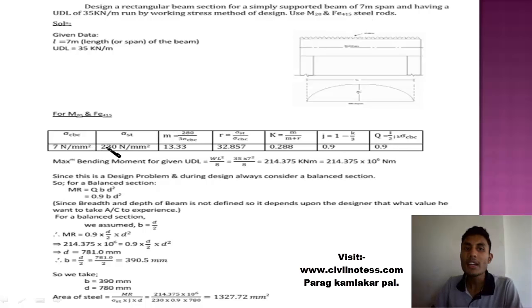From that we can calculate sigma CBC and sigma SD which is 7 Newton per mm square and 230 Newton per mm square. We have to first calculate the modular ratio M, which is one of the assumptions of the working stress method. M equals 280 upon 3 sigma CBC, which is given as 13.33.